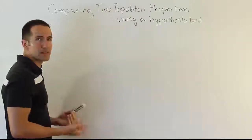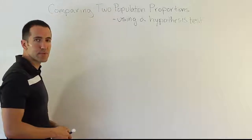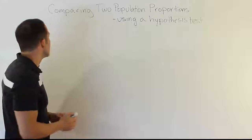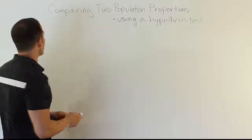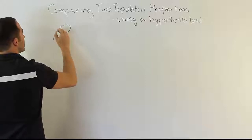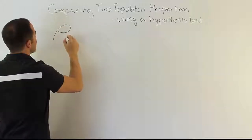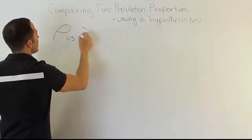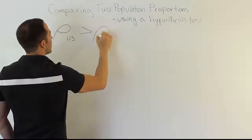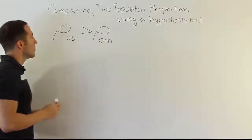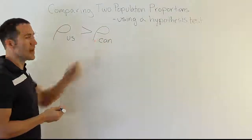When you read the problem you would know it's a hypothesis test about proportions when they mention something about a rate, a percentage, or a proportion. So let's give a made-up example here. What if I said I believe that the proportion of divorces or the rate of divorce in the United States is greater than the proportion of divorces in Canada? Okay, so the proportion in the US is greater than that in Canada.